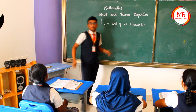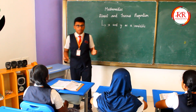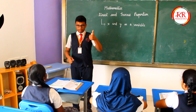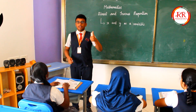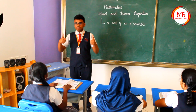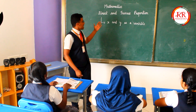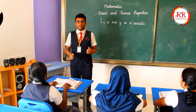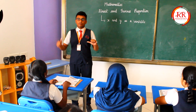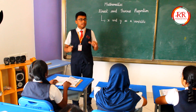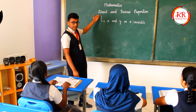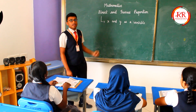Now, what is direct proportion? If the value of X decreases, at the same time the value of Y also decreases, it is said to be direct proportion. Similarly, if X increases and Y also increases at the same time, that is also direct proportion.